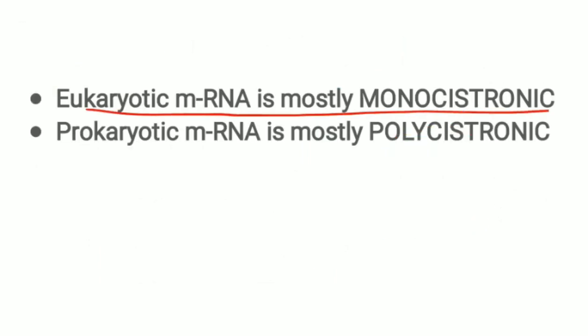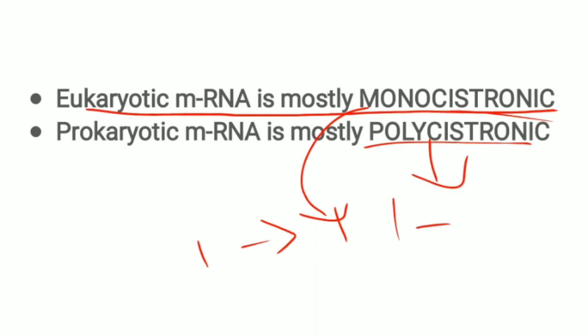Eukaryotic mRNA is mostly monocistronic. Cistron means gene; monocistronic means one mRNA produces only one protein. Polycistronic means one mRNA produces more than one protein. In eukaryotes, all introns are spliced off and a single protein is produced, whereas in prokaryotes co-transcriptional translation is occurring.